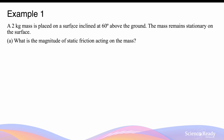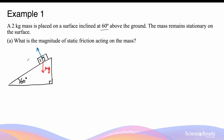A 2 kg mass is placed on a surface inclined at 60 degrees above the ground. We have an inclined surface at 60 degrees with a 2 kg mass. Let's identify all the forces: a downward weight force, an upward normal force perpendicular to the surface, and static friction acting up the slope. It is static friction because the mass remains stationary, so it is in static equilibrium. What is the magnitude of static friction acting on the mass?